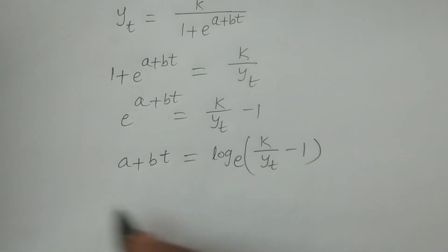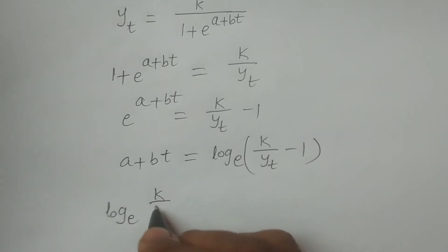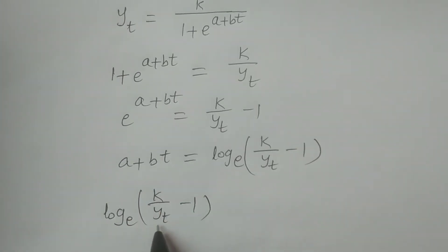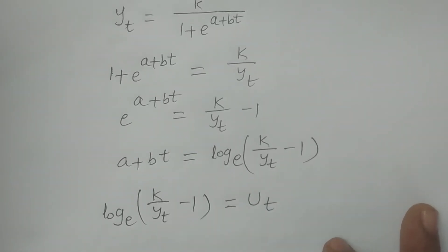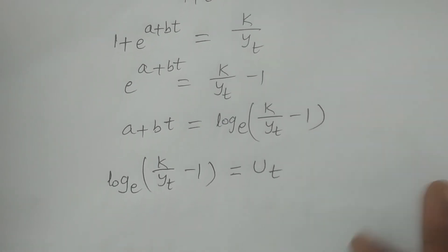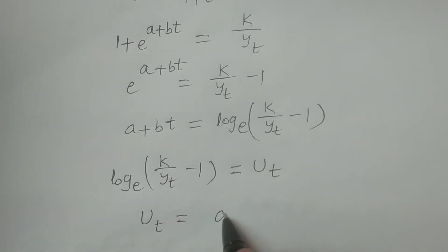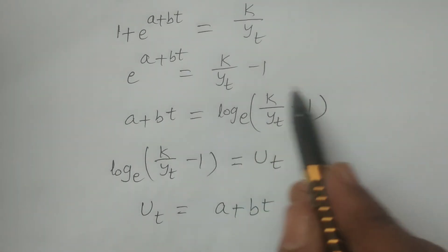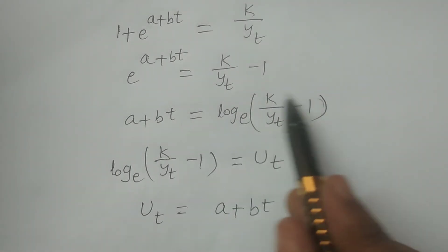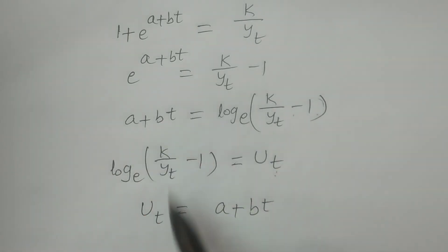If you consider log base e of (k/Y_t minus 1), this equals a + bt, in which you have the variable Y_t. So, I am considering this as u_t. If we let u_t equal log base e of (k/Y_t minus 1), then u_t is equal to a + bt. This is looking just like a straight line.